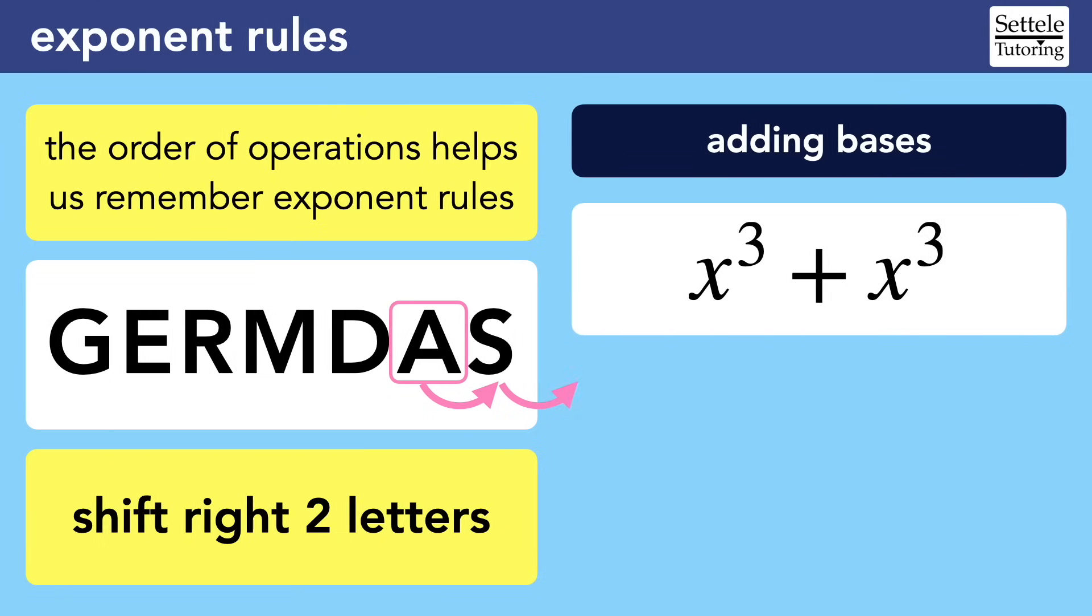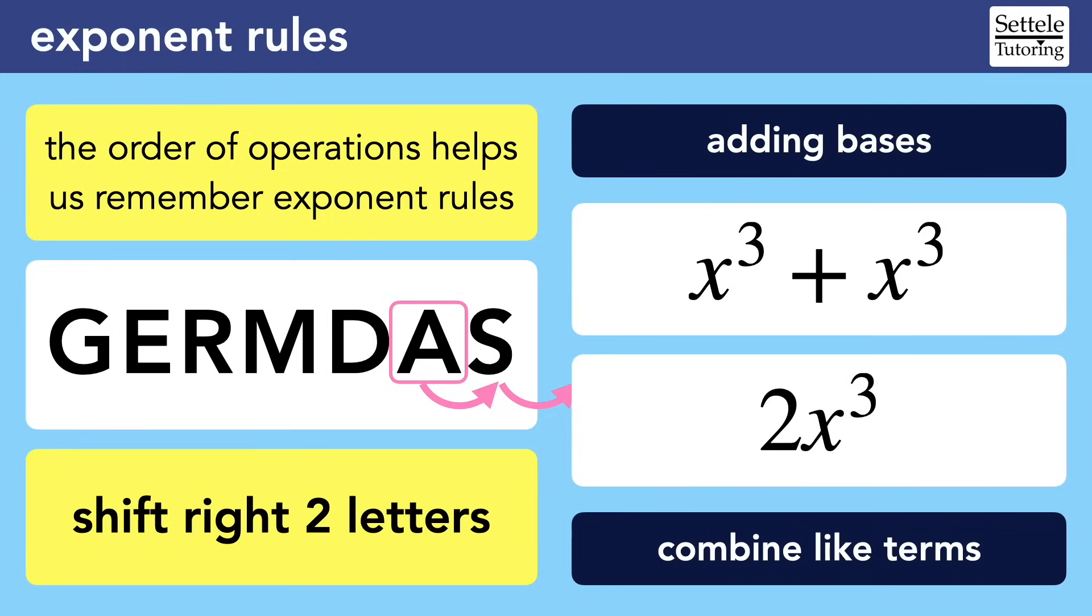The only real exception is when the two terms are the same type. In this case, X to the third plus X to the third. But notice that combining them does not change the exponent like it did in the other examples. Basically, it's good to remember that exponents don't mix very well with addition and subtraction. As we said at the beginning, exponents are a condensed version of multiplication, so we're pretty far removed from the simplicity of addition and subtraction.